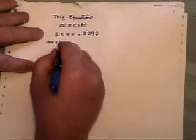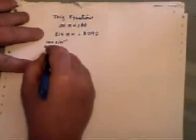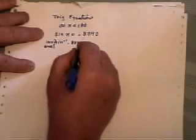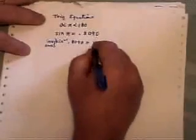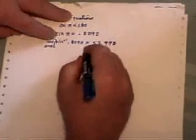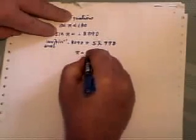I'm going to hit the inverse sine button, or on some of your calculators, the second sine button, and do 8090 and hit equals. Out pops 54 degrees. It's actually 53.998, and we're going to round that off to x equals 54 degrees.